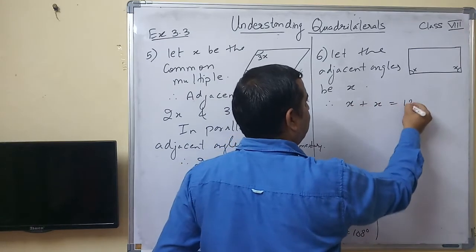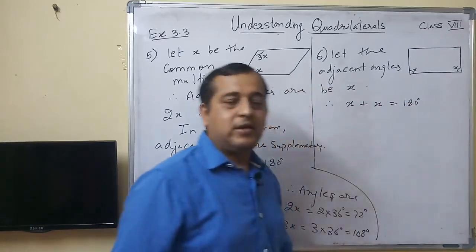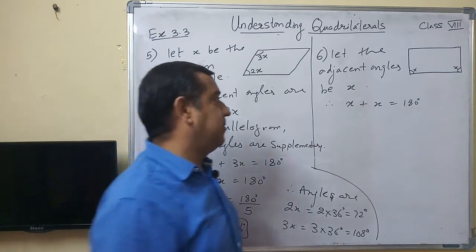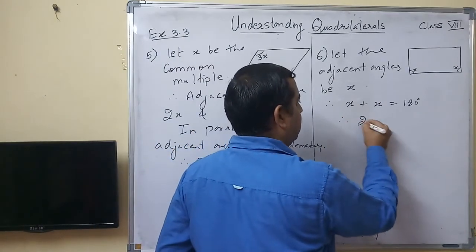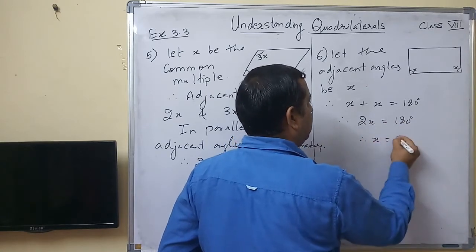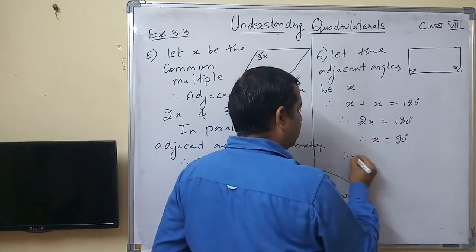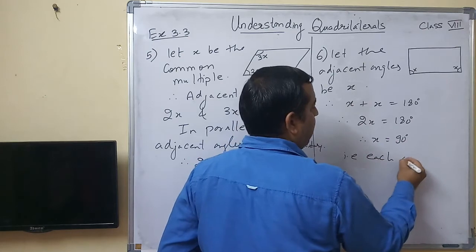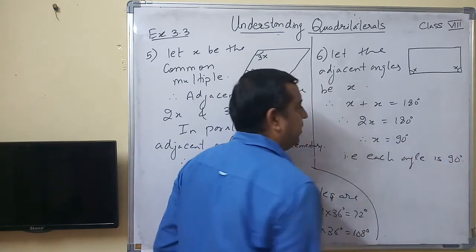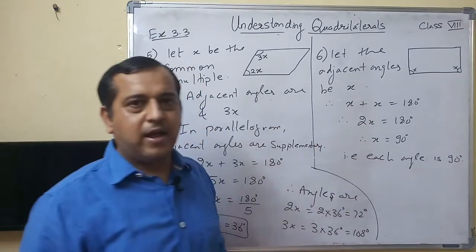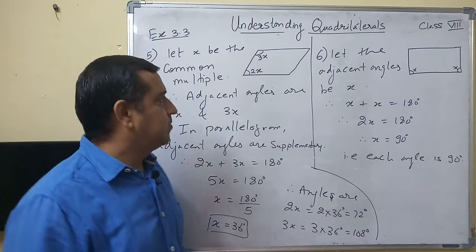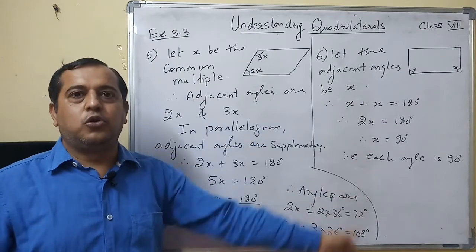So x plus x is equal to 180 degrees, because the adjacent angles are supplementary and their addition is 180 degrees. Therefore 2x is equal to 180 degrees, giving x equal to 90 degrees. That means each angle is 90 degrees. So every angle in this parallelogram is 90 degrees.